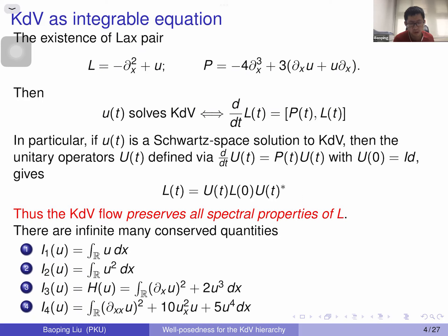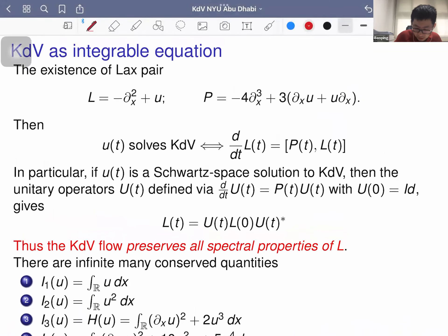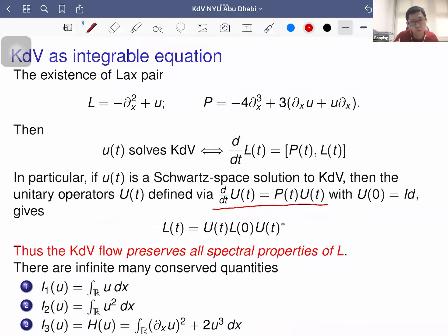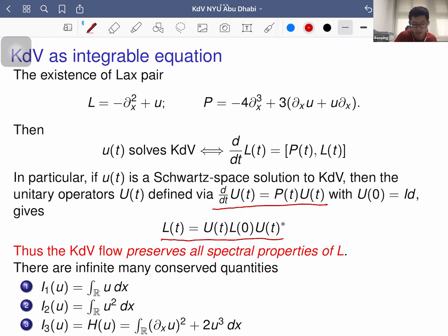This is called the existence of a Lax operator. If u is a Schwartz solution to KDV, then P generates a unitary operator U(t), and L(t) = U(t) L(0) U(t)⁻¹. This tells you that the spectral properties of L are preserved by the flow — just as with a matrix, the eigenvalues of L(t) and L(0) are the same. The spectral information is preserved at any time t.